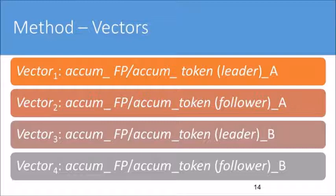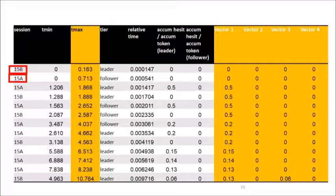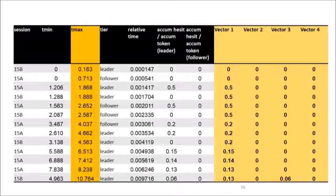The merged dataset was augmented with four additional vectors corresponding to the four possible combinations of role (leader or follower) and session (A or B). Each vector contains a relative filled pause use at the endpoint of each IPU, separated by session. The vector size reflects the number of points in time where at least one of the speakers in one of the sessions expressed a filled pause or a word. The last value of each of the four vectors reflects the total relative filled pauses used in a respective session for a respective speaker.